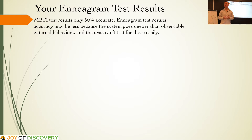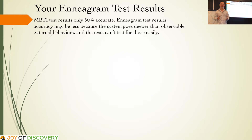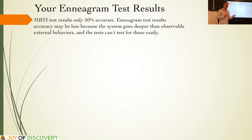As MBTI instructors note, the official test results are only around 50% accurate. What I would imagine is that when you look at the Enneagram, which goes far deeper than MBTI, your Enneagram test results are probably going to be even less than 50% accurate. Because the Enneagram measures observable external behaviours and the tests don't really or easily test for your internal drives and motivations.